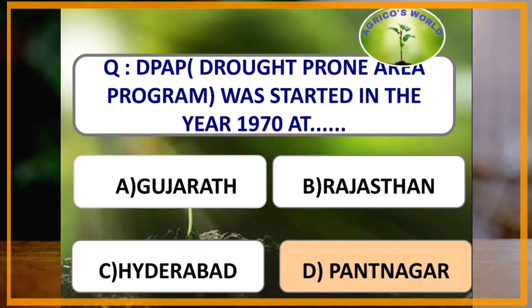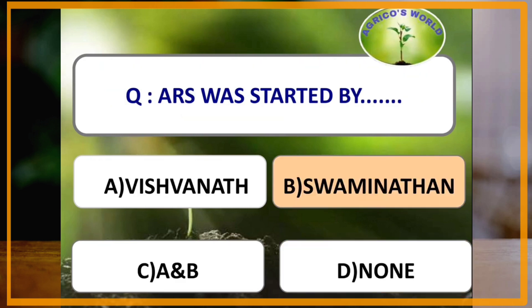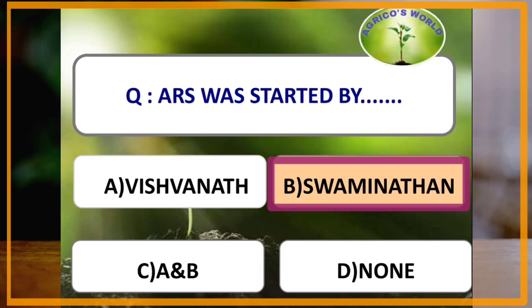DPAP — Drought-Prone Area Program — was started in the year 1970 at which place? The answer is Pantanagar. The first Agriculture University was also started at Pantanagar. ARS (Agriculture Research Service) was started by which scientist? ARS was started in the year 1973 by Swaminathan.